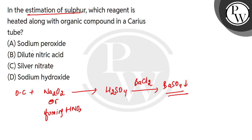So, we can use sodium peroxide. We cannot use dilute nitric acid, we cannot use silver nitrate for sulfur, and sodium hydroxide is also incorrect. Only sodium peroxide is the correct answer. I hope you understood. Thank you.